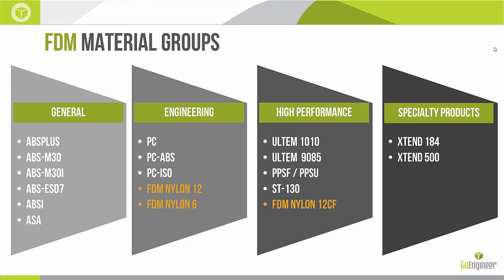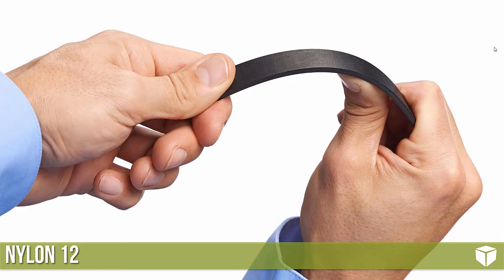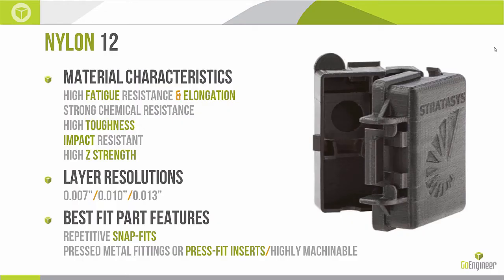So those are the three materials: Nylon 12, the original nylon that's been out for a couple years; Nylon 6, which came out last fall; and Nylon 12 CF, which was just recently released within the past month. Nylon 12 was most welcome because it represented a shift in the applications we could use FDM for — it was the first material that was truly flexible and abrasion resistant. The fatigue resistance and the elongation at break were unparalleled at the time.